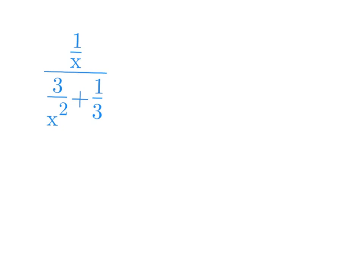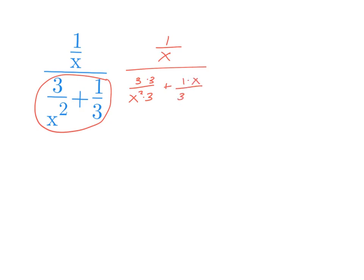Now let's say we have a complex fraction — we know it's a complex fraction because we have fractions within fractions. Our goal is going to be to start out by combining the denominator. I have one over x on the top and I'm going to leave that, and I'm going to work on making the denominator fractions have a common denominator. I have three over x squared, and I'm going to multiply that by three on the top and bottom, and with one third I'm going to multiply by x squared on the top and bottom so they share a common denominator.